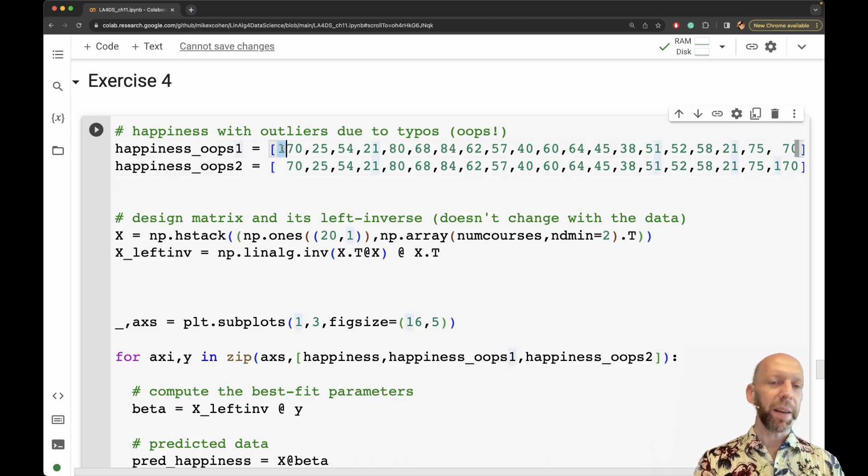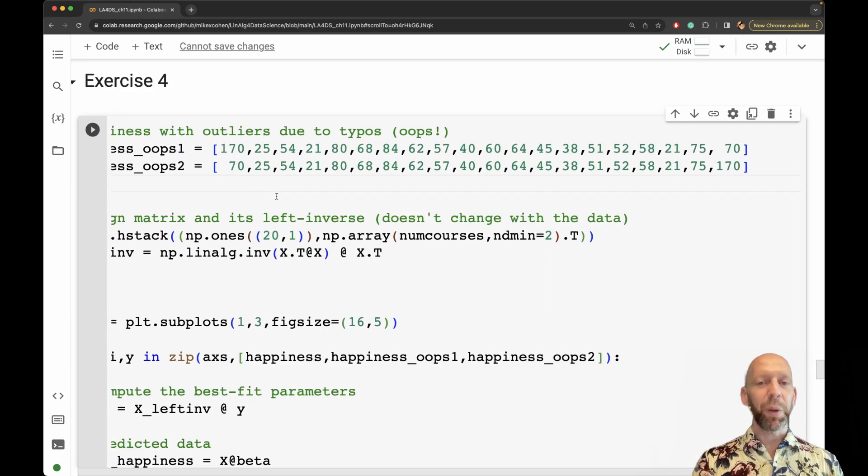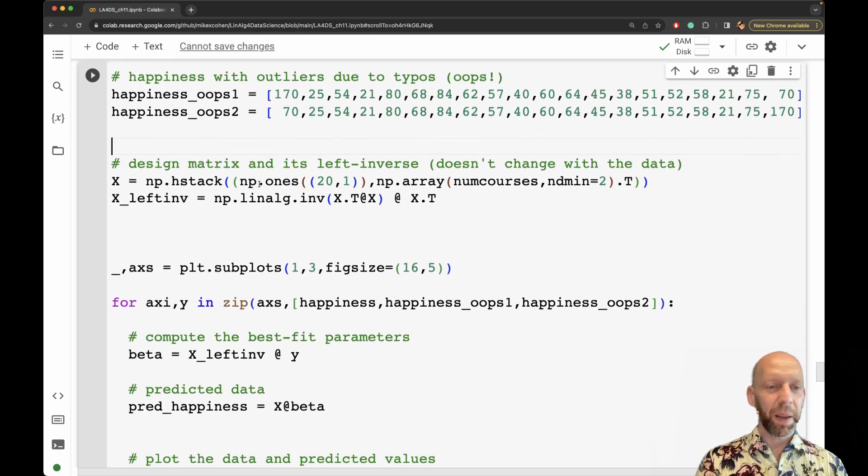This would be the kind of error that can be introduced into your data, just due to typos. Someone is keying in these data, and they just accidentally type an extra number. Fortunately, these kinds of errors are pretty easy to detect. Because in this case, we say that happiness is rated on a scale from zero to 100. So it's not possible to have a numerical value higher than 100.